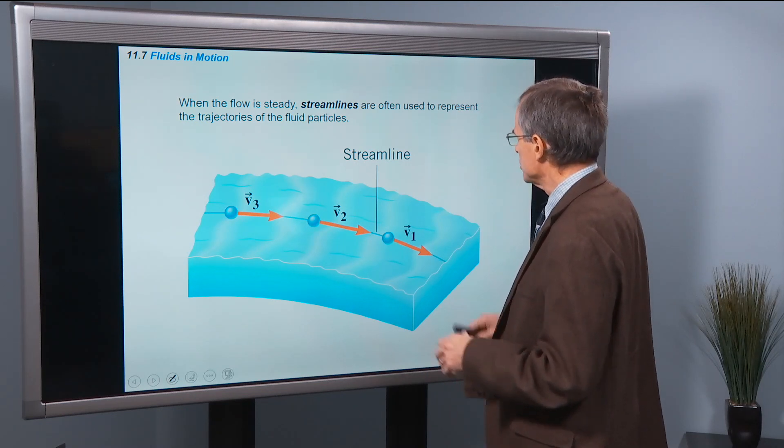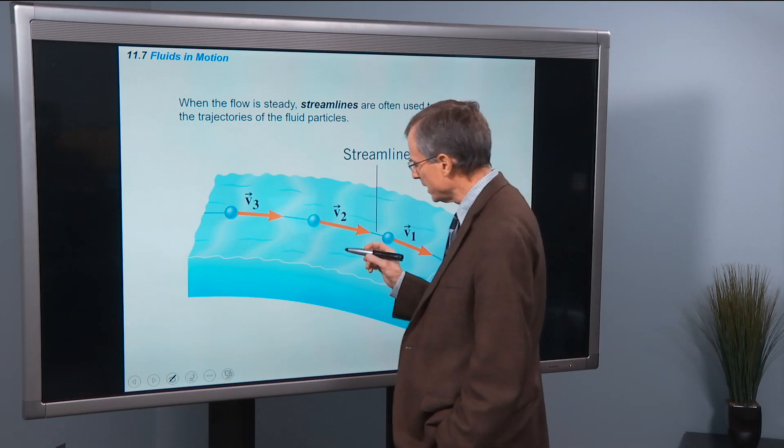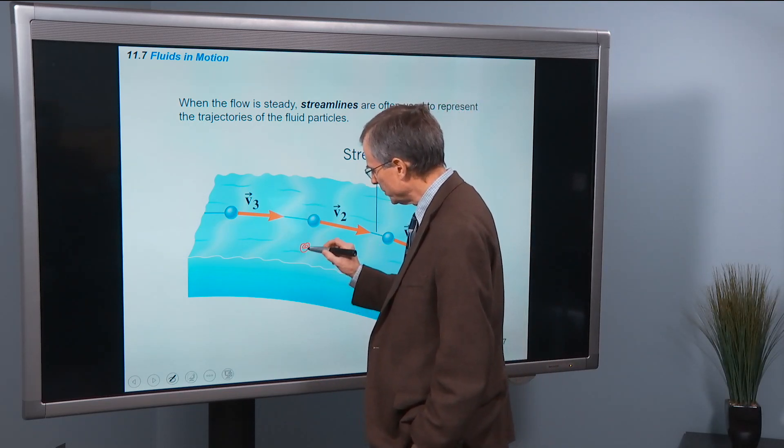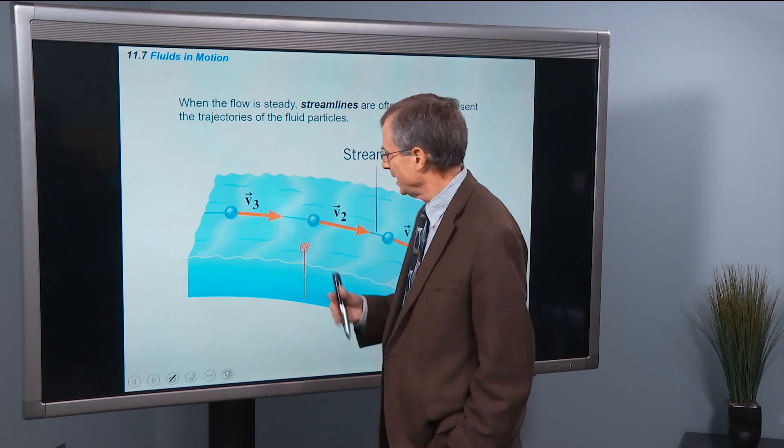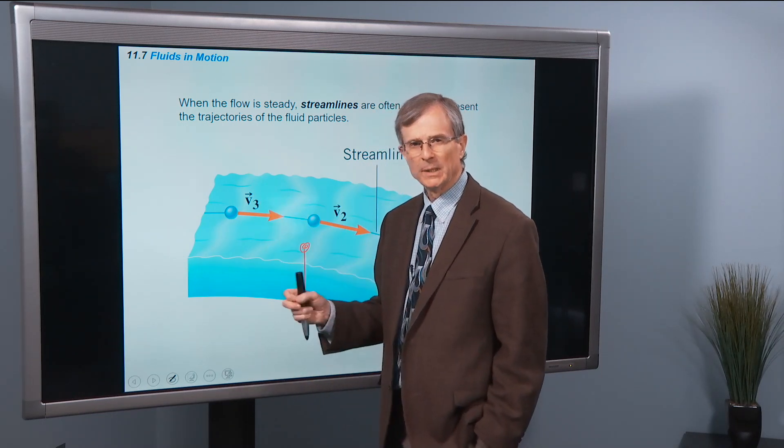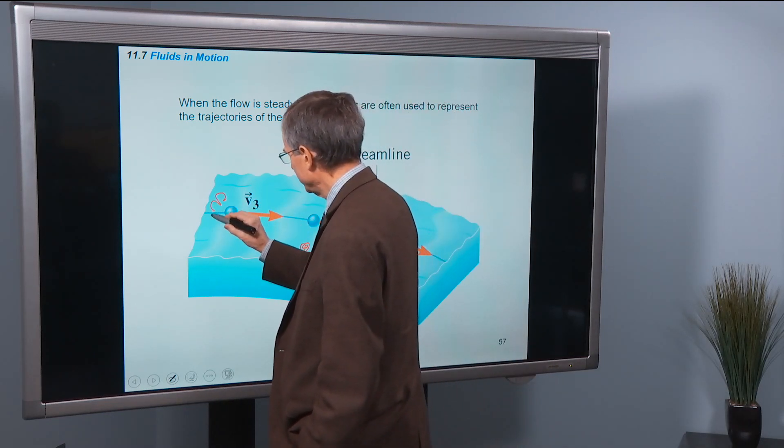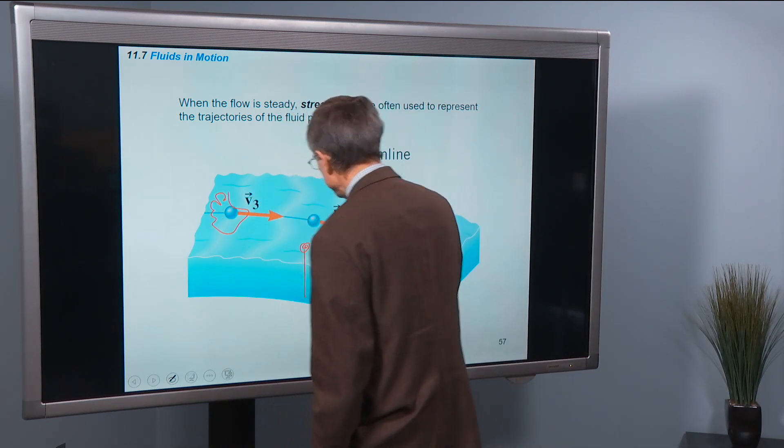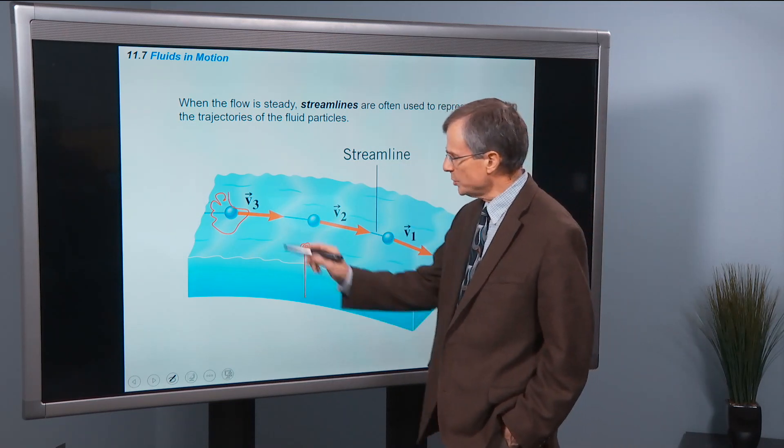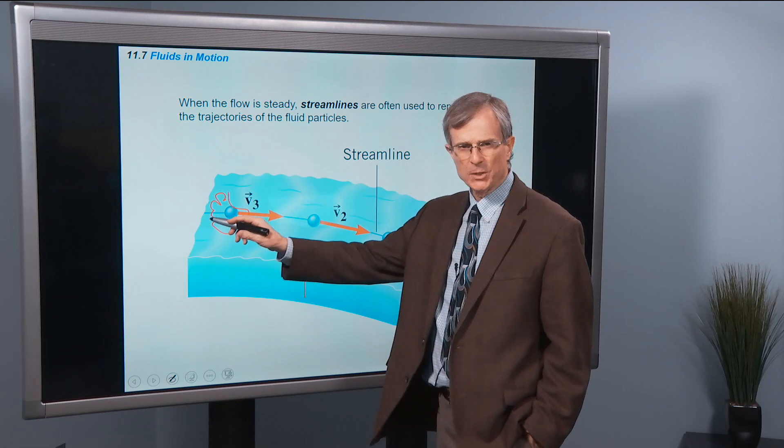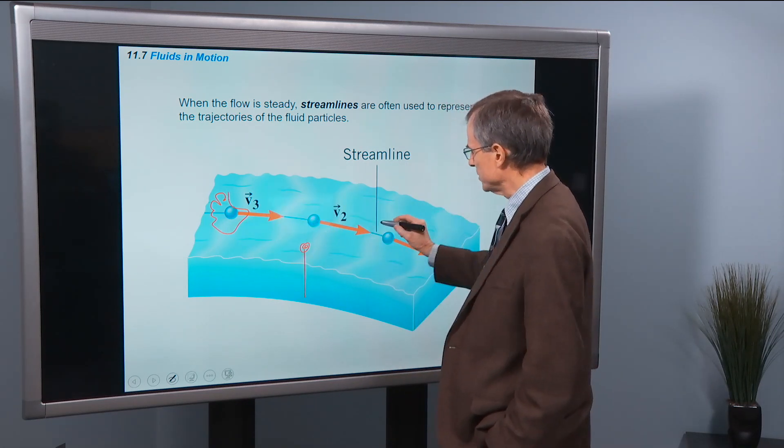When the flow is steady, streamlines are used to represent the trajectories of the fluid particles. So now, instead of thinking about sitting in a particular spot in the fluid and watching the fluid flow past you, now we're going to put a leaf or something in the flow and follow that leaf as it moves through the fluid. And that motion of a particular leaf or some kind of tracer particle moves along what's known as a streamline.